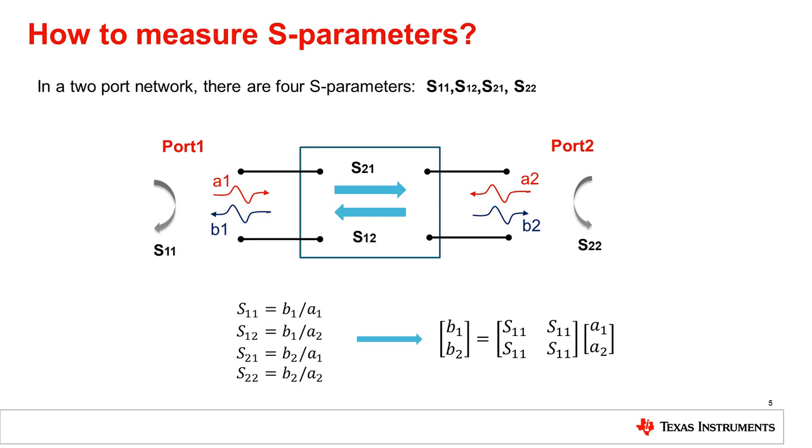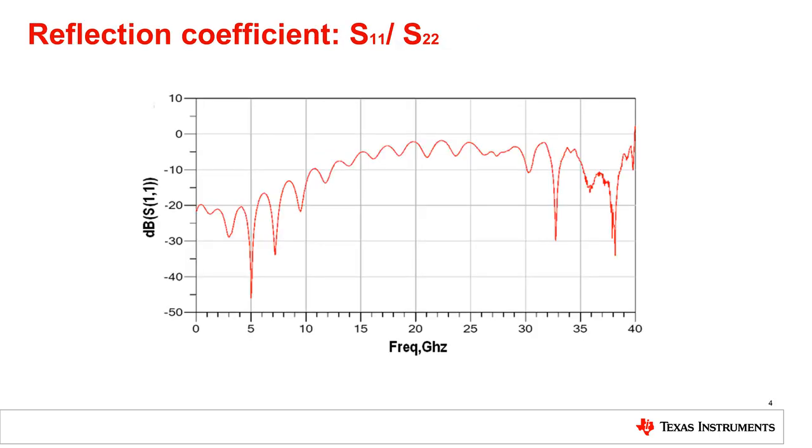For a two-port network, these four S-parameter values can be characterized by a set of equations which is defined as the ratio of the power at the output port to the corresponding input port. This matrix can be expanded into equations, which is useful when calculating the S-parameter values. The graph in this slide shows a high-speed multiplexer S11 plot.